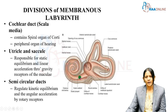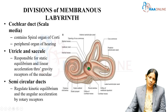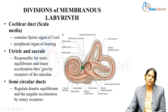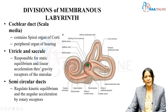The cochlear duct continues to the utricle and saccule. The utricle and saccule are sac-like structures — broader unlike the cochlea or the semicircular ducts — so they are given two different names: utricle and saccule. They are continuous anteriorly with the cochlear duct and posteriorly with the semicircular ducts. The utricle and saccule are the part of the membranous labyrinth housed within the vestibule, which is the bony labyrinth.